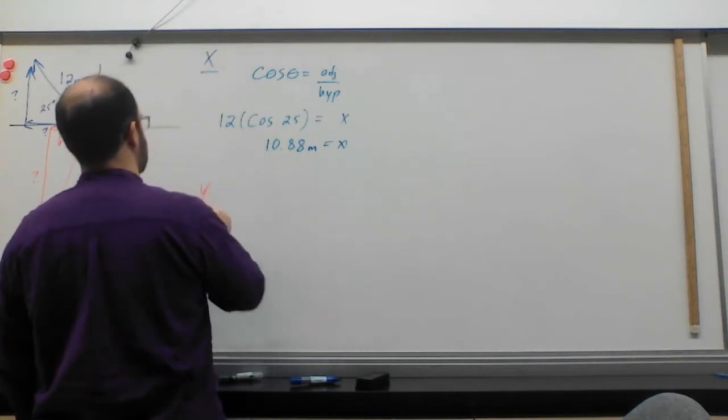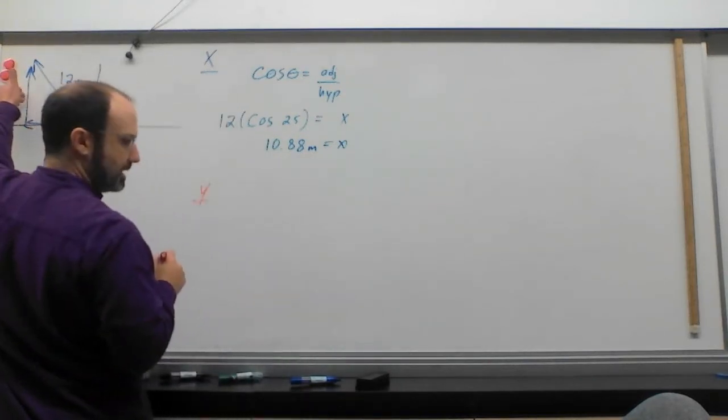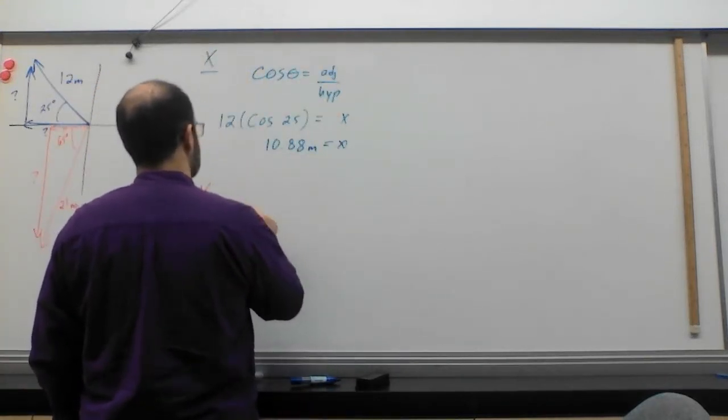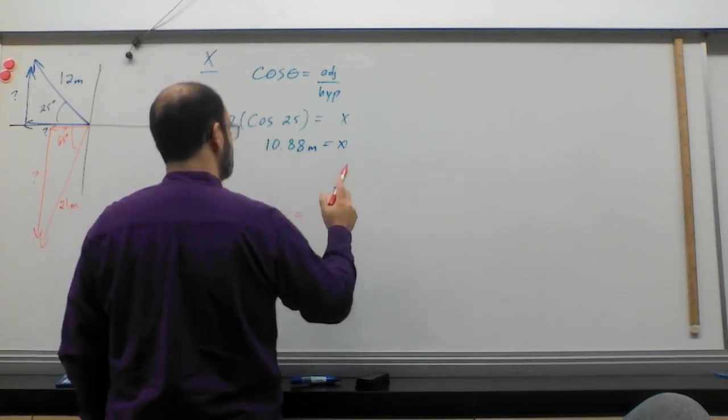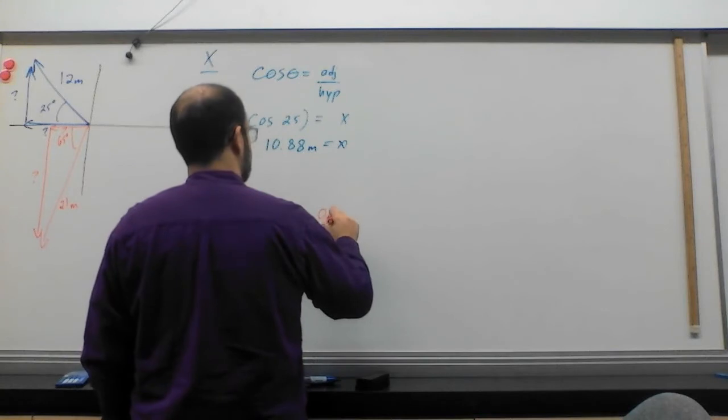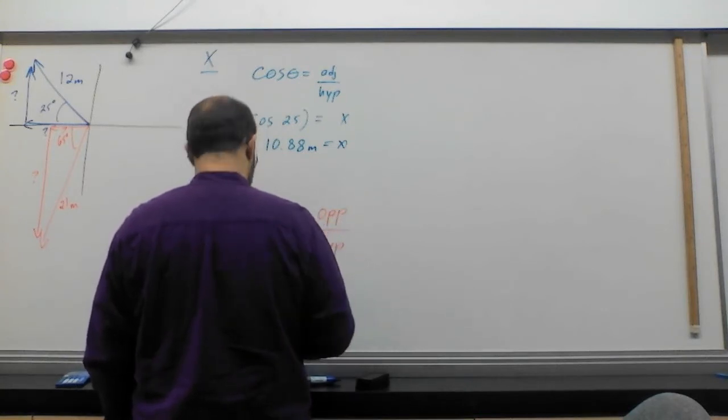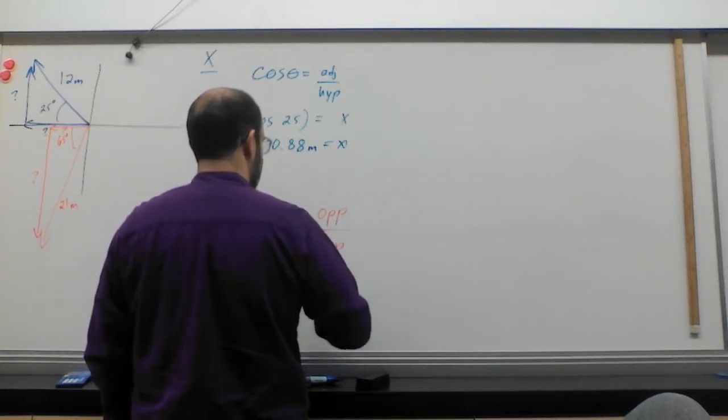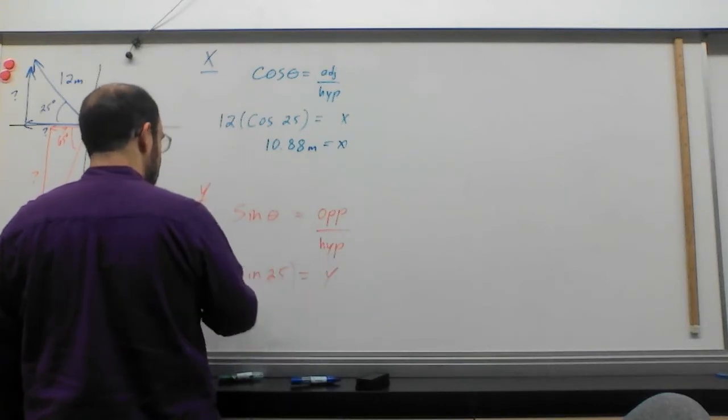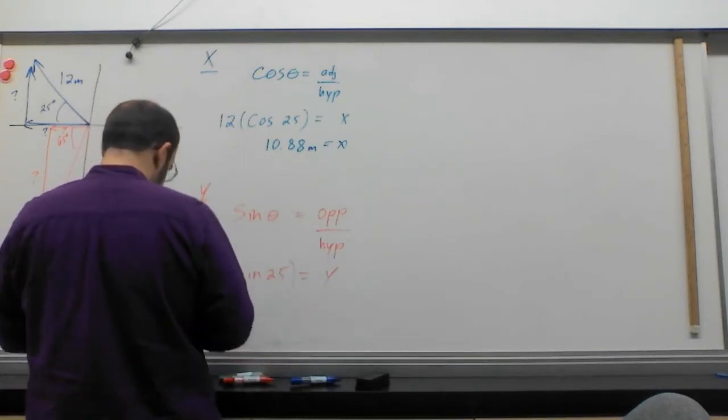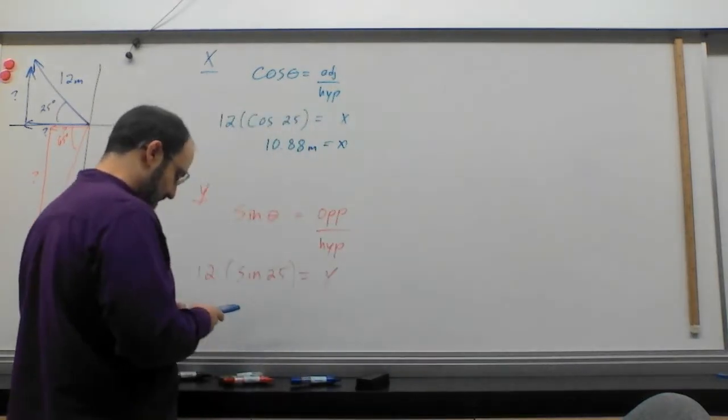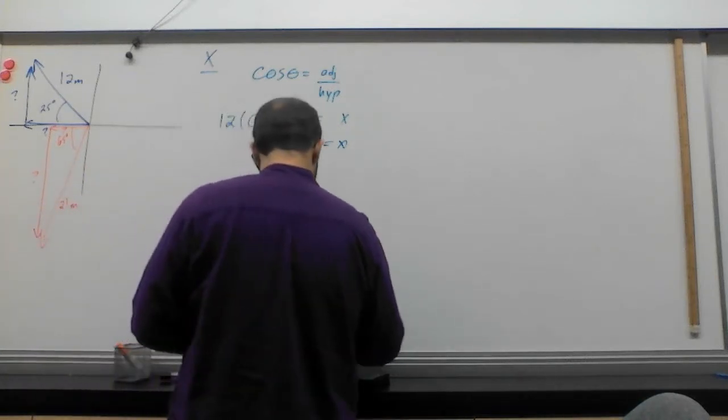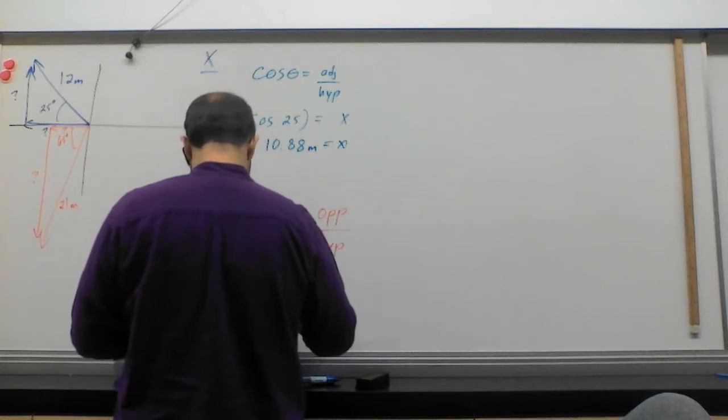What about y? Well, y is over here. It's opposite. So y is going to be sin theta equals opposite over hypotenuse. That's going to be sin 25 equals y. Hypotenuse is going to be 12 again. So I'm going to do sin of 25 times 12. And that's going to give me 5.07.